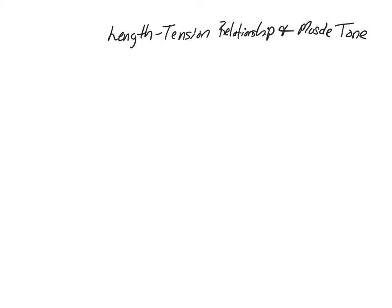So when we're looking at the relationship between length and tension, basically what you're looking at is how long is the muscle fiber or the muscle cell. What you've got is stretch — the more stretch there is, the more potential shortening you can have. So it's the relationship between how stretched it is versus how shortened it can become.